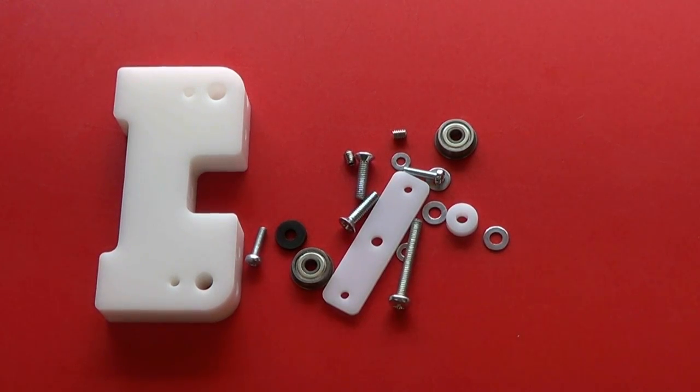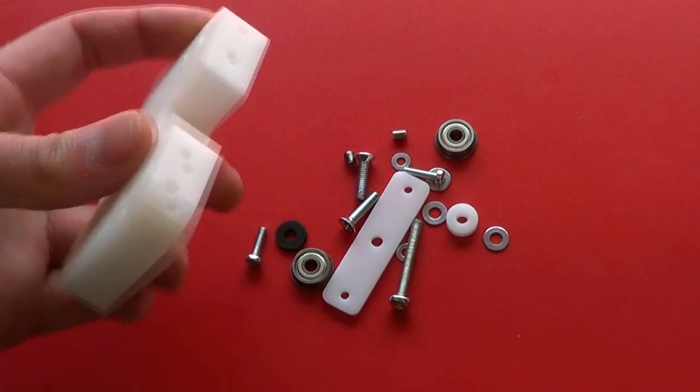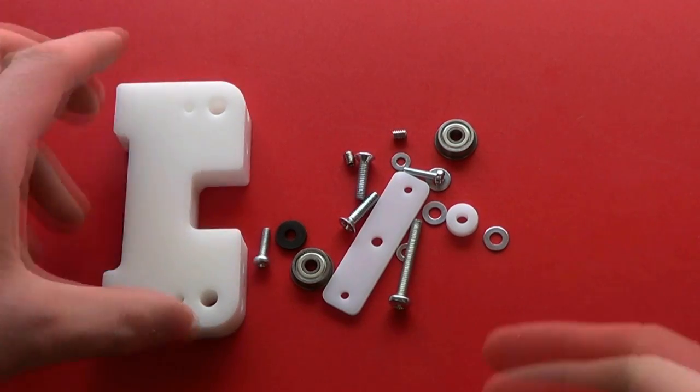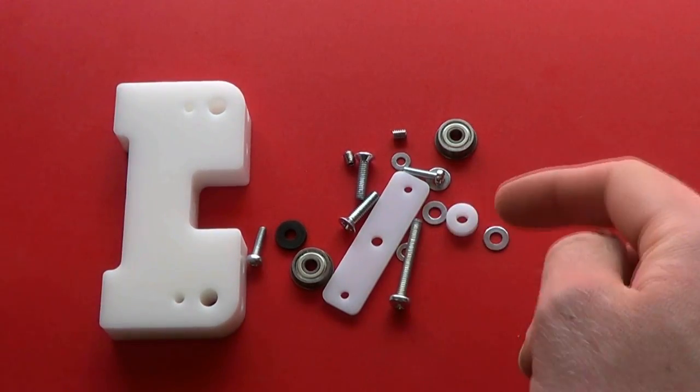This is the right hand X support plus the X belt idler pulley. So take the other X support block and the contents of bag number 4.